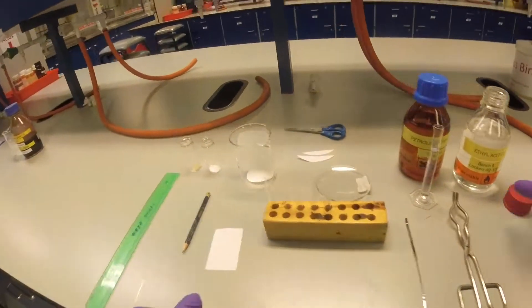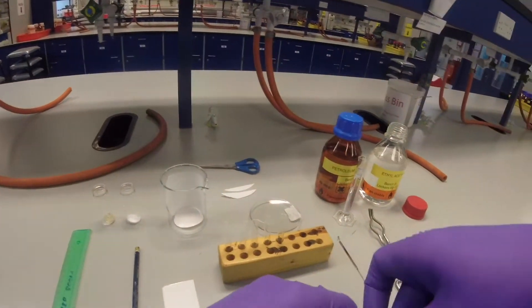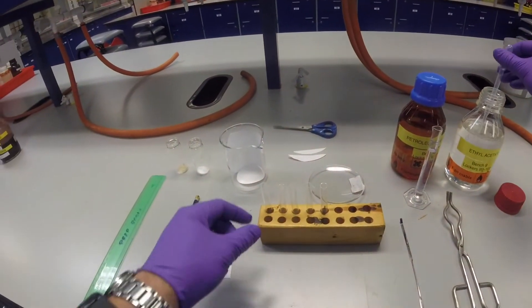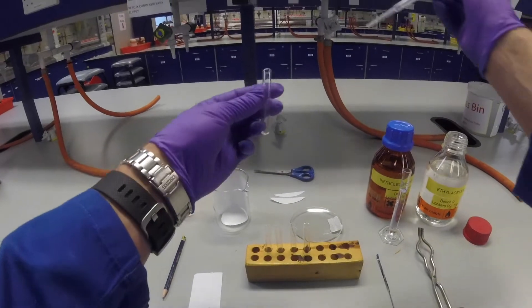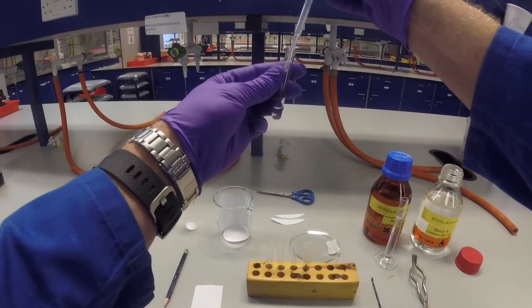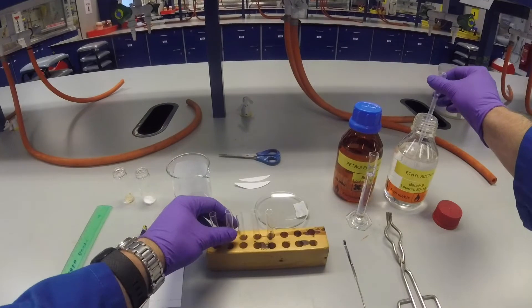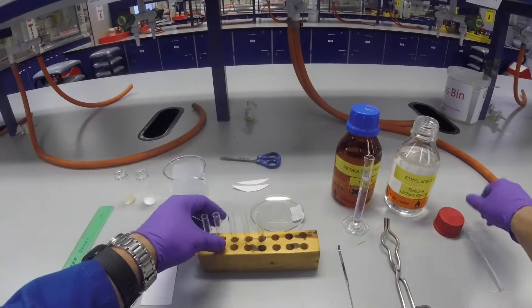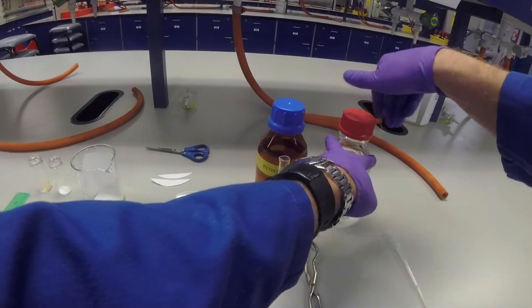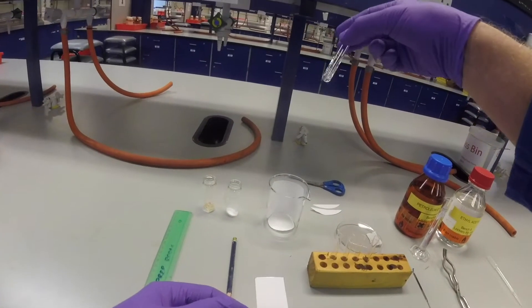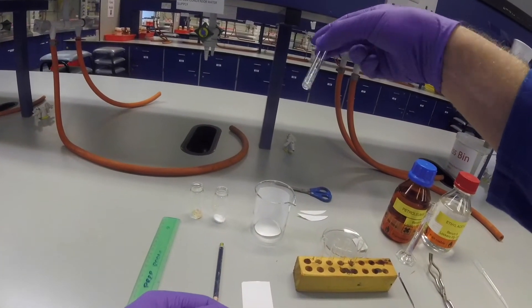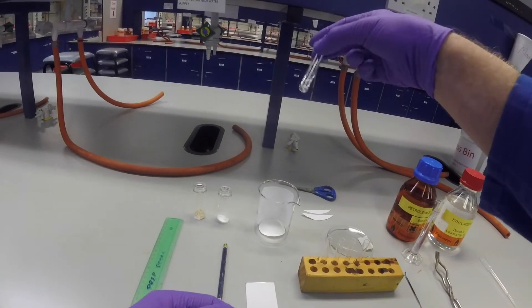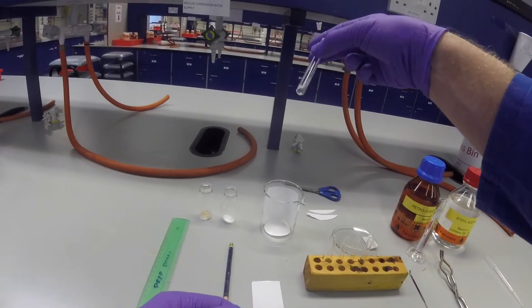We're going to take a pipette and add a little tiny bit of ethyl acetate to each of these tubes because we want to dissolve our compounds. We use about half a milliliter in each one. We use the polar solvent to make sure they dissolve. It doesn't matter if they don't completely dissolve, enough will be in solution.